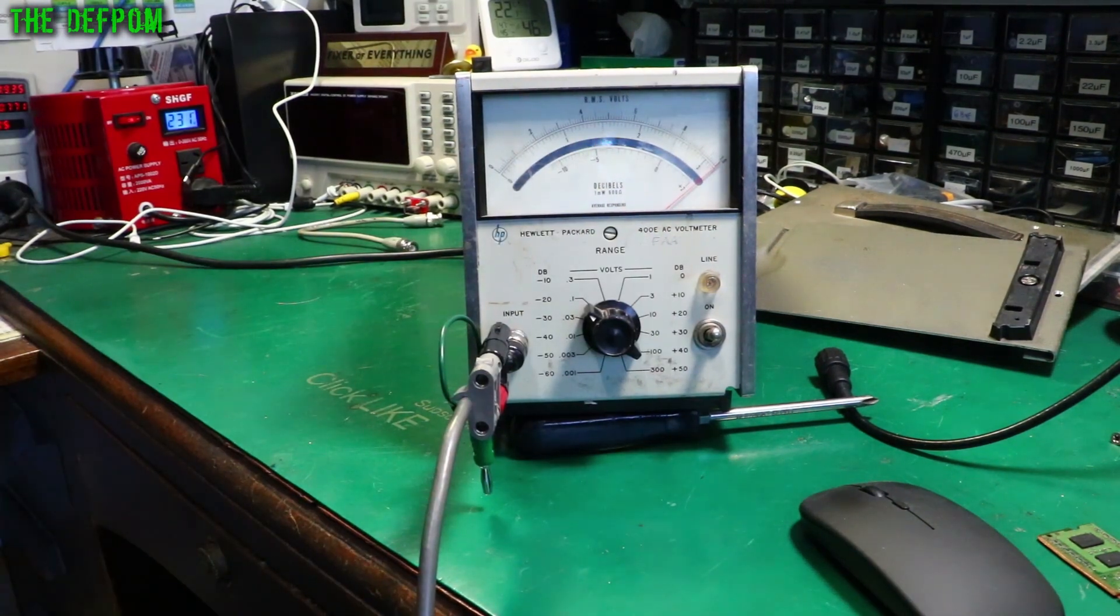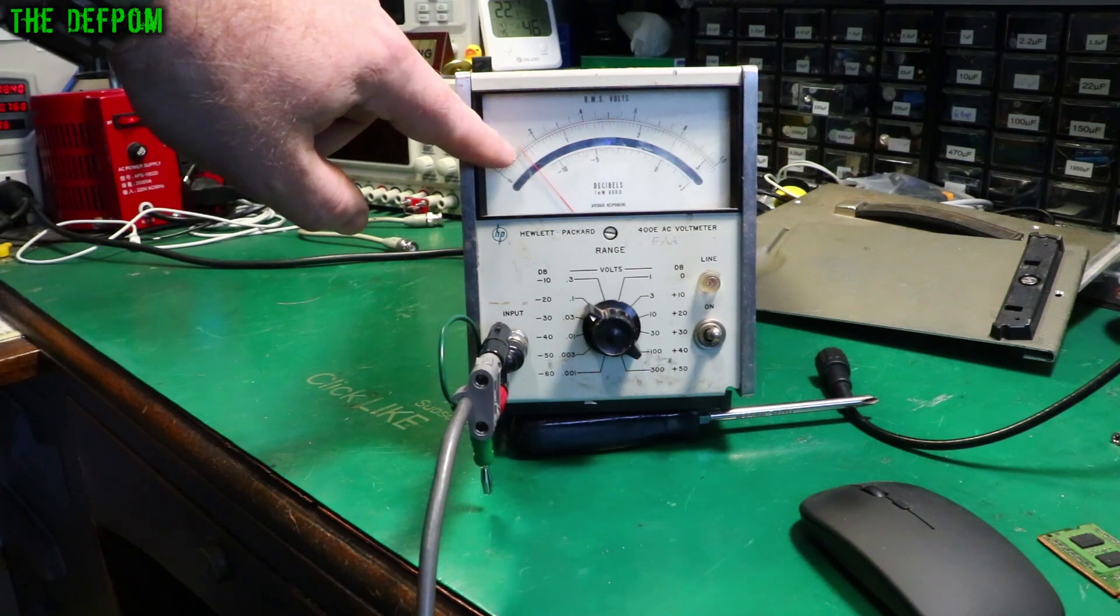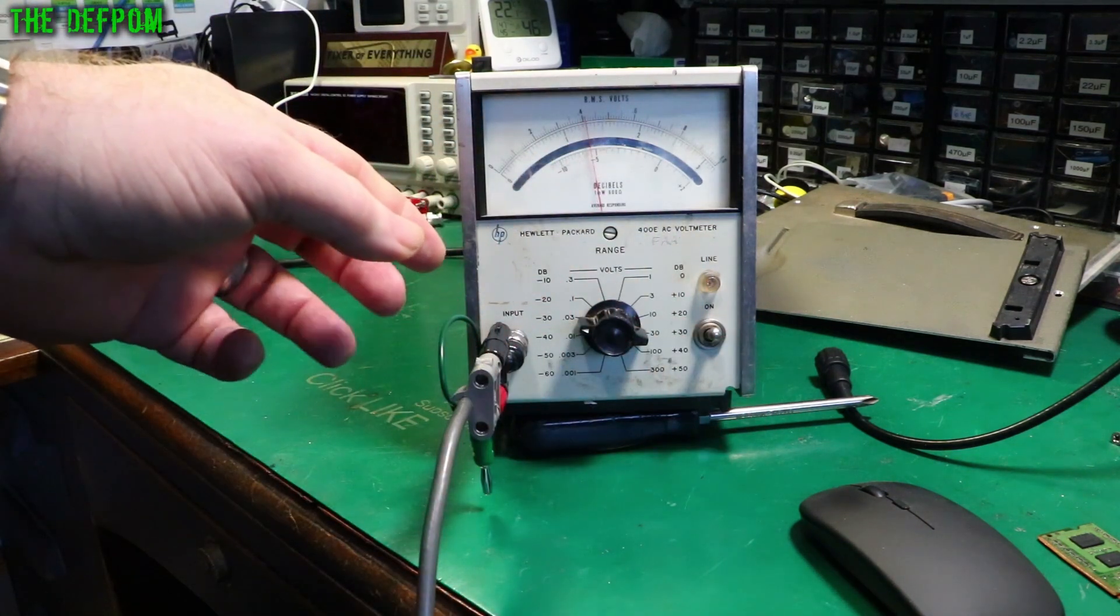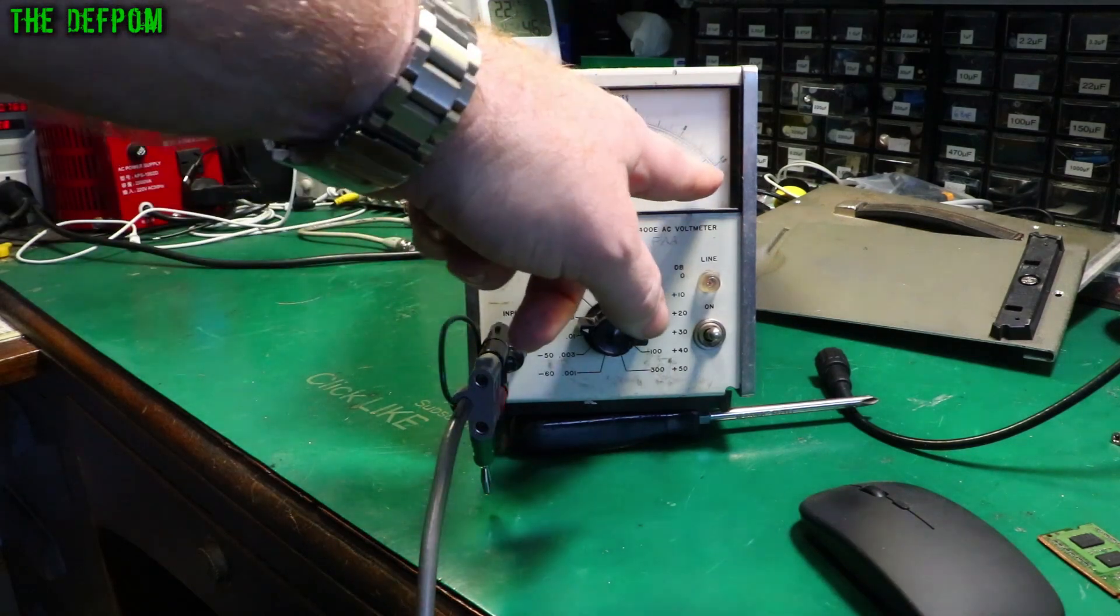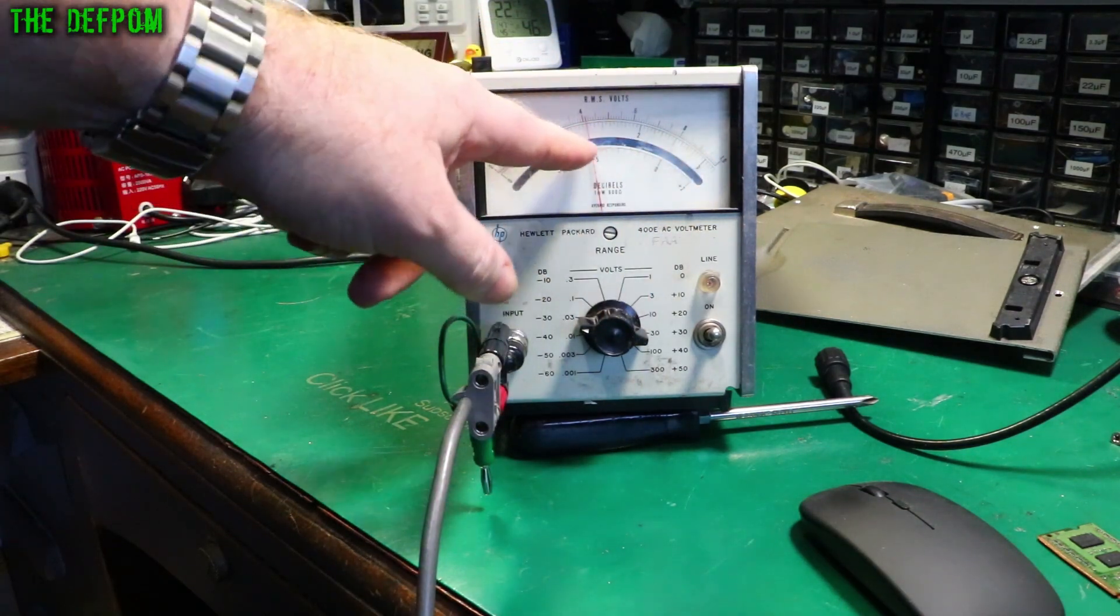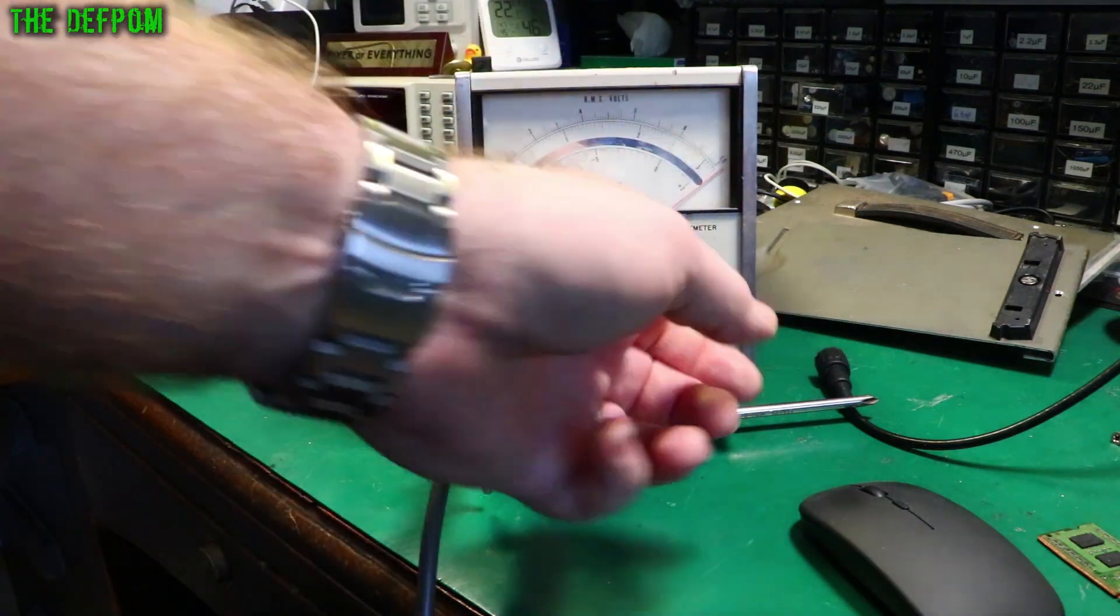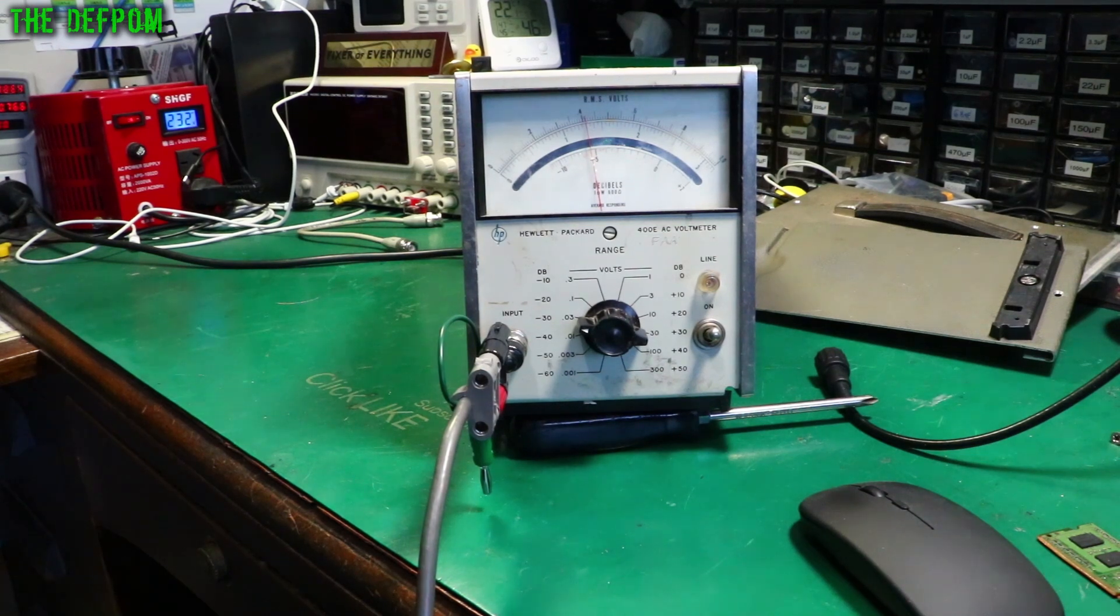Go down to 10 millivolts. So on this scale we should be there but we're slightly high. Actually no I'm on the wrong one. Sorry, that's the three scale. So it should be here, so it's reading slightly high there. And on the one it's reading above. Okay so it's reading slightly higher in that particular scale, which is interesting.